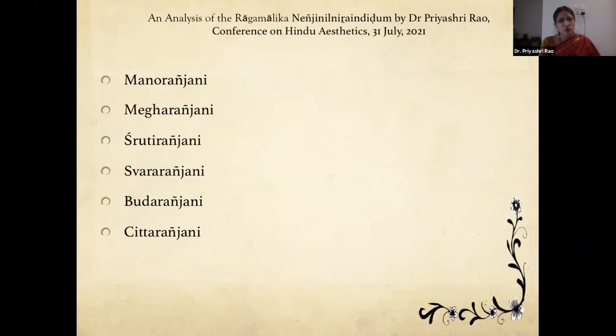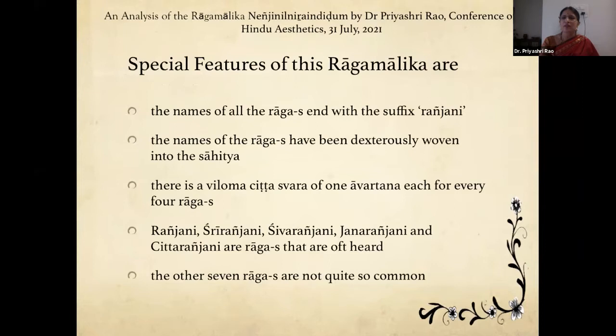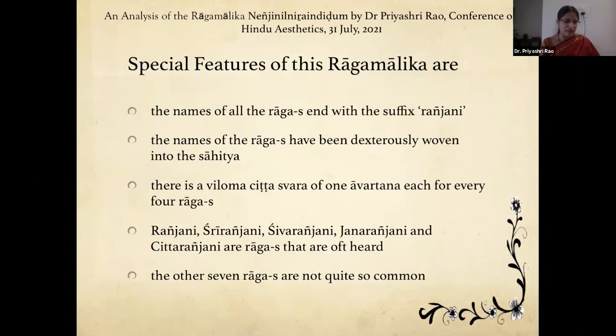Budha Ranjani and Chitta Ranjani. Some special features of this Raga Malika: if you would have noticed, the names of all the ragas end with the suffix 'Ranjani' — the first raga of course is just Ranjani. The names of the ragas have been dexterously woven into the sahitya. There is a viloma chittaswara of one avartaram each for every four ragas. For instance, the pallavi is set in Ranjani and Shri Ranjani, followed by the anupallavi in Guha Ranjani and Shiva Ranjani.